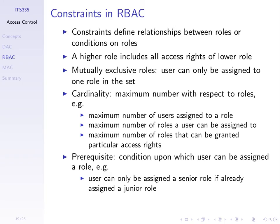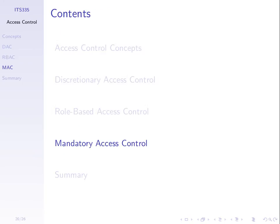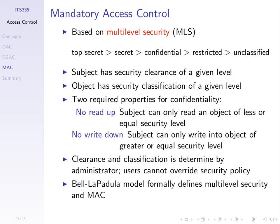Let's look at the third option: mandatory access control. As opposed to discretionary—where users could make some changes to permissions—in mandatory access control, once the administrator sets up the permissions nothing can be changed. It leads to much stricter control of the resources. It's based on the concept of multi-level security used in military organisations. An example classification might be: top secret, secret, confidential, restricted, and unclassified—though there may be other names or different numbers of levels.